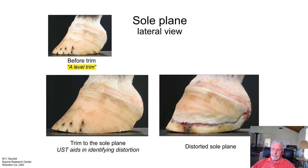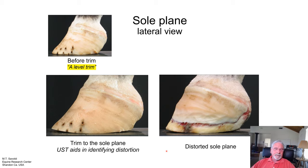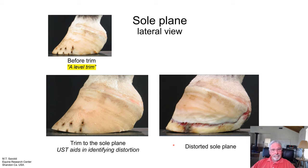Here's our distorted sole plane showing the effects of uniform sole thickness, identifying the distortion. This is the effects of a poor nail placement — pressure necrosis showing up. If you look closely right in here, you can see that the distal border, the sensitive lamina, is starting to harden and scar. If it gets hard enough, it will damage the area of the bone.